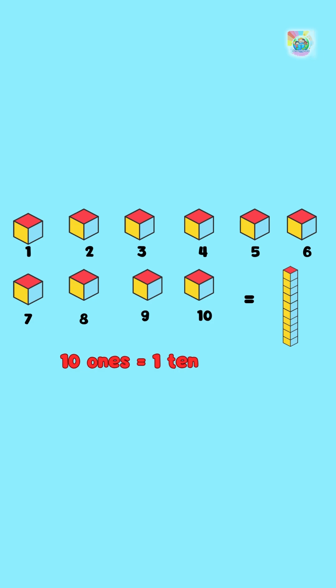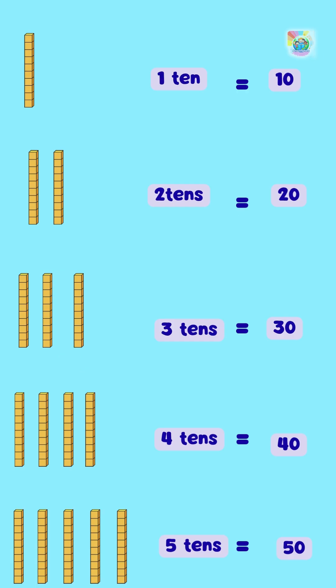Ten ones make one ten. One ten equals ten, two tens equal twenty, three tens equal thirty, four tens equal forty, five tens equal fifty.